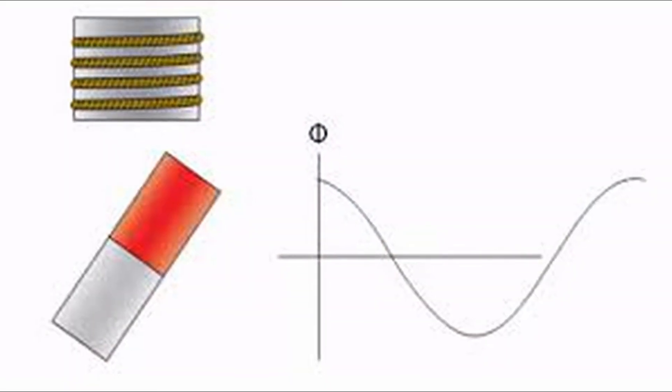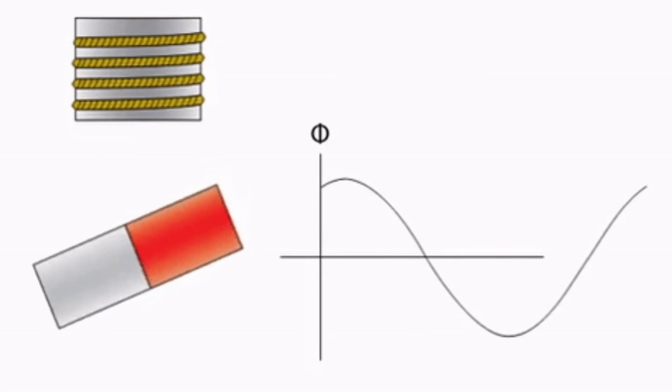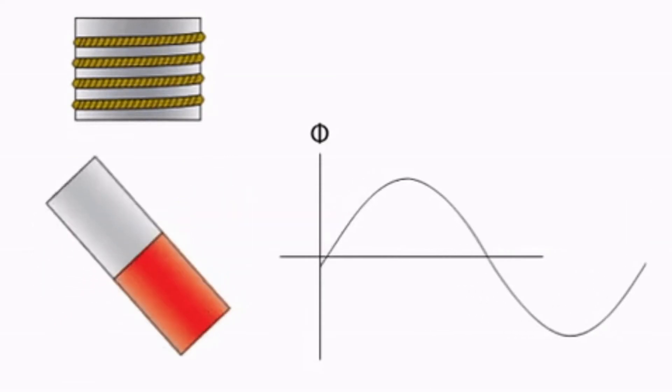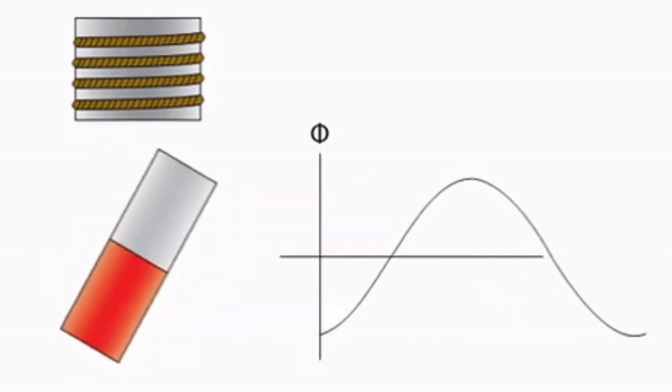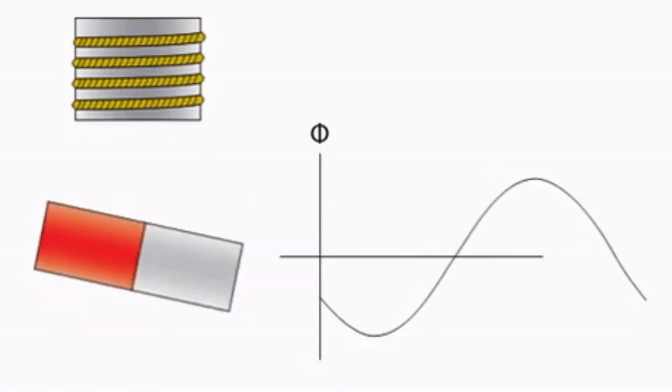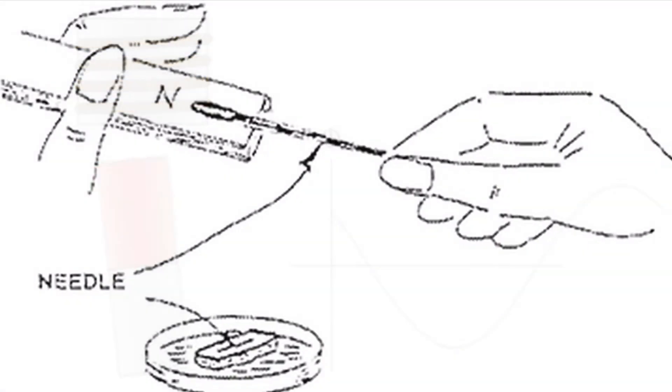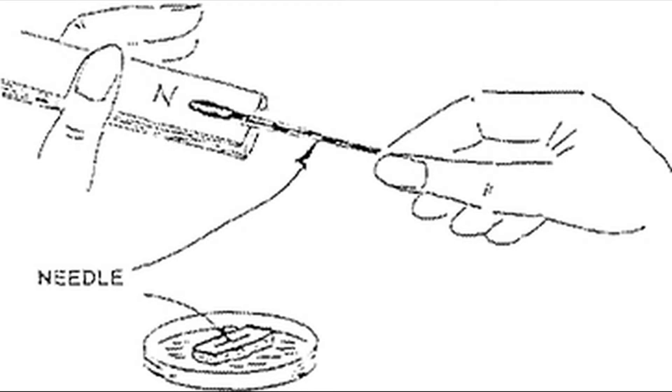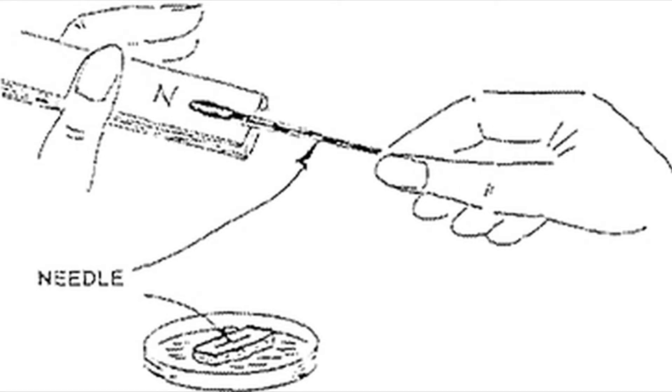On reaching the pointed end, lift the magnet well away and bring it back to the eye of the needle. Repeat this procedure many times. The eye end of the needle becomes the south pole and the pointed end becomes the north pole. The polarity of the needle can be reversed by stroking the needle in the same manner, but with the north pole of the bar magnet.